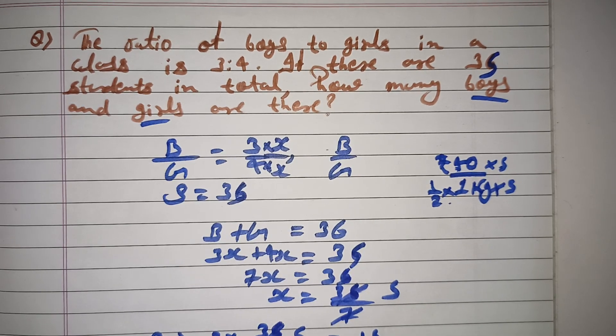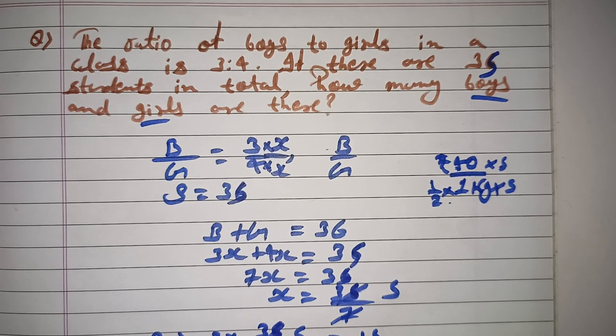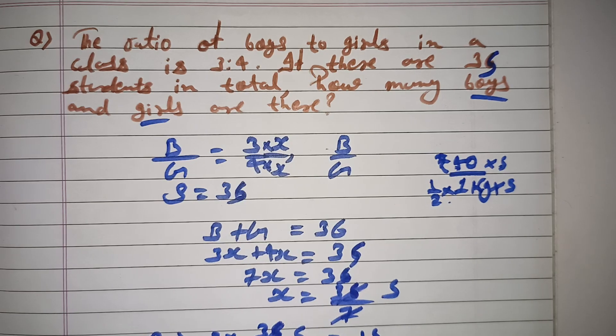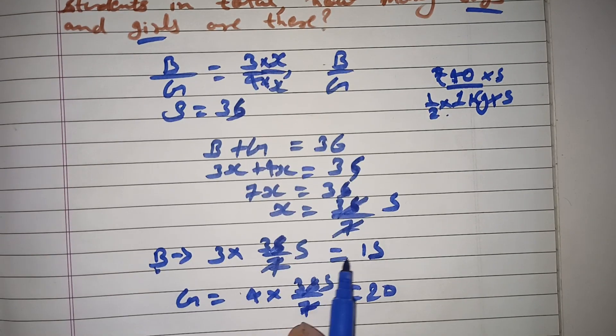Girls: multiply 4 into 35 by 7. That's 4 times 5, which equals 20. So boys are 15 and girls are 20.